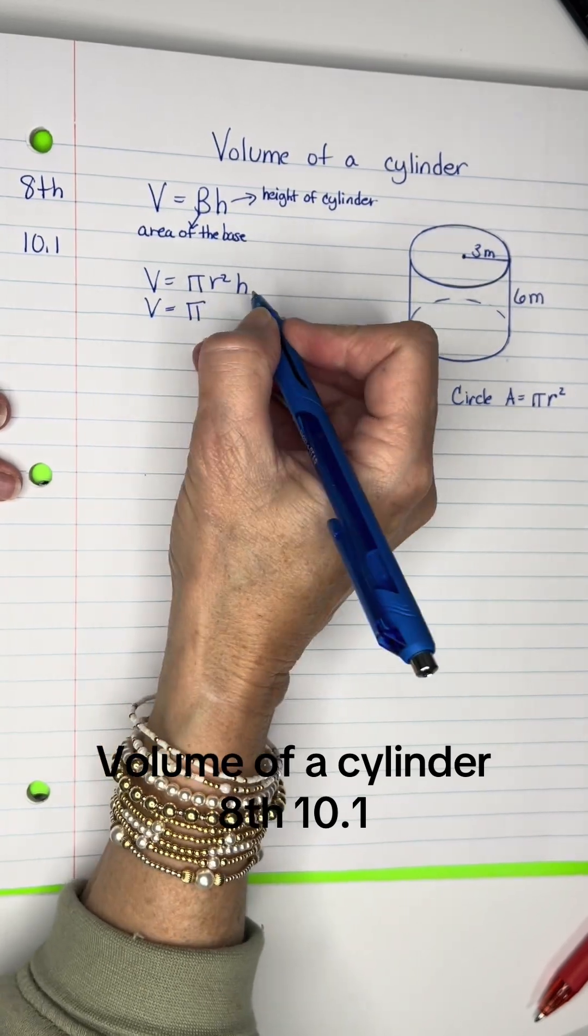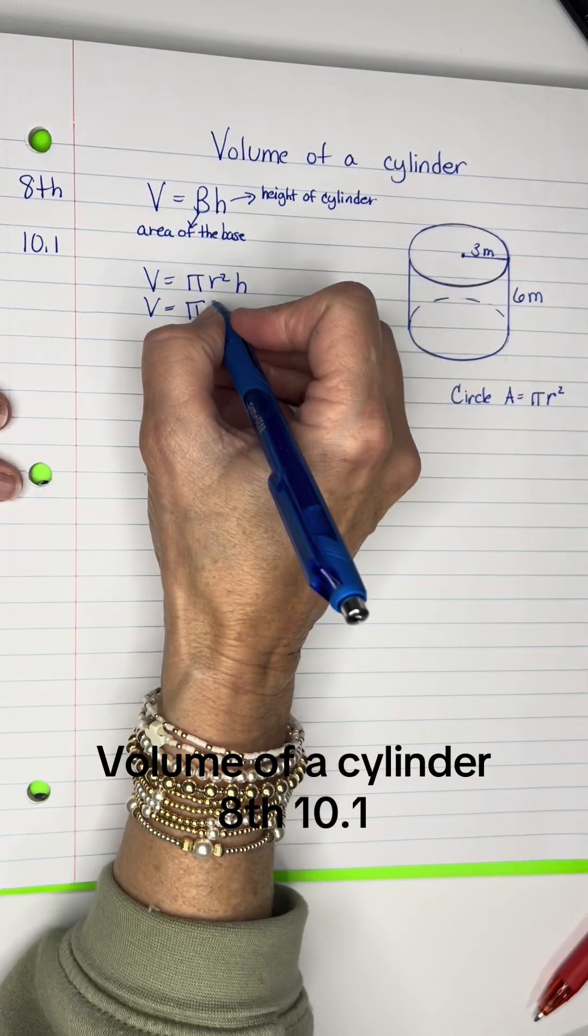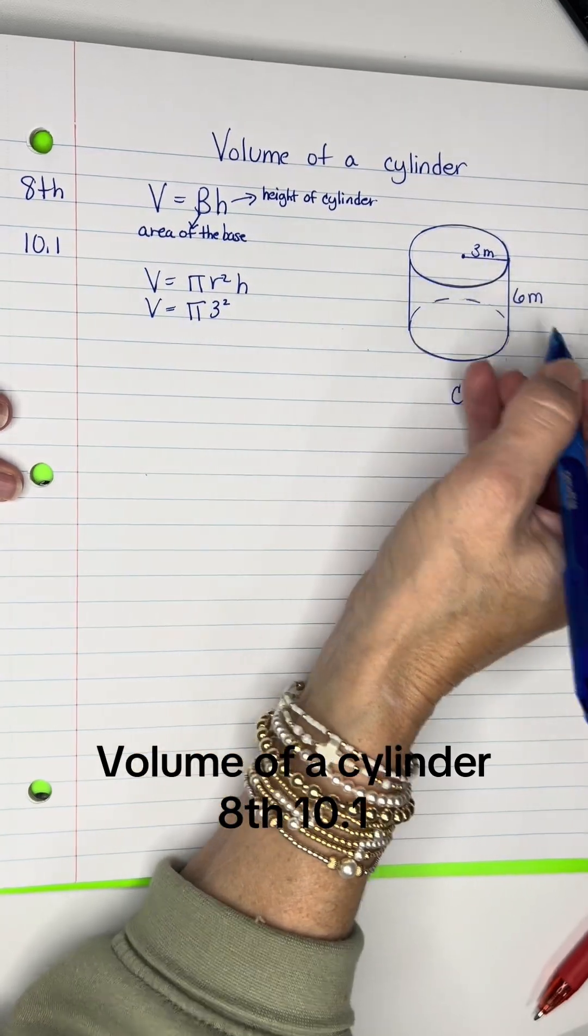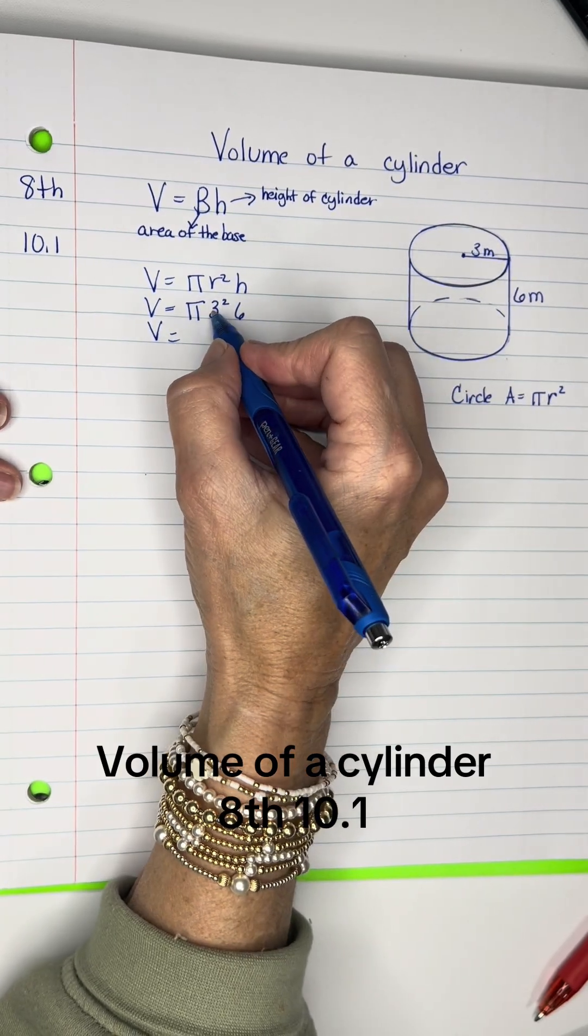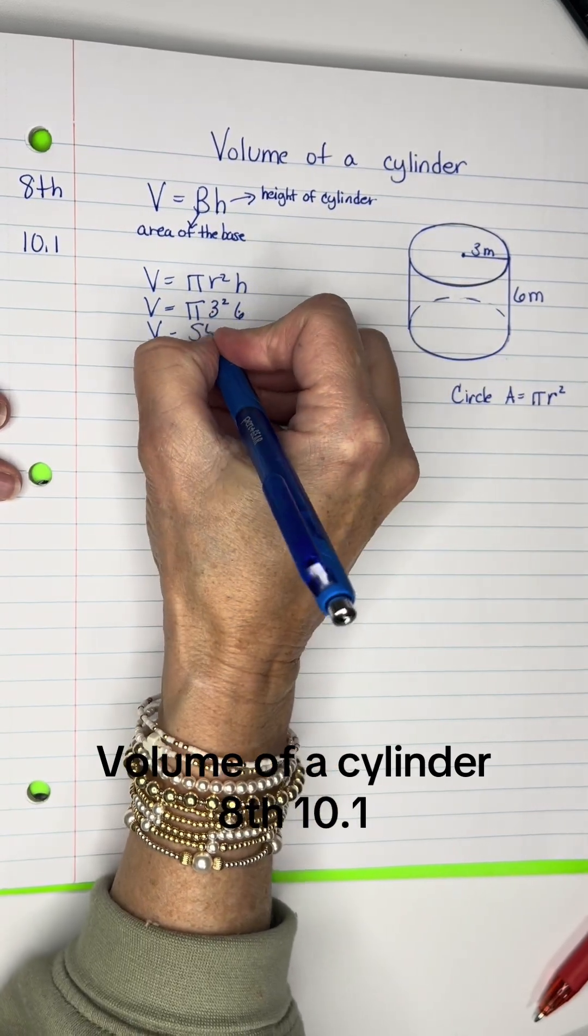So I've got my pi, and my radius is 3 squared, and my height is 6. So I have 9 times 6, which is 54 pi.